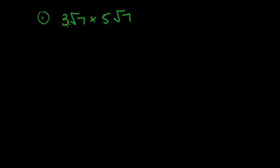So this is slightly different because now we have numbers out the front. But again, it all means the same thing because this actually means 3 times root 7 times 5 times root 7. And then we can just simply times the things that we know that will work.